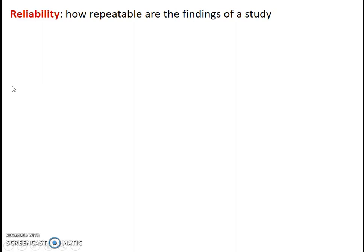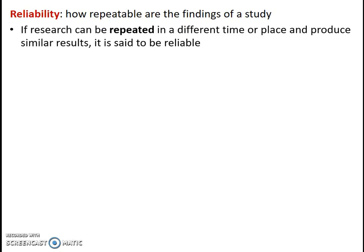So we're going to start off by talking about reliability. Reliability essentially is how repeatable are the findings of a study. Try to remember: reliability, repeatable — those two words together. Can you repeat the study easily and get similar findings? Because if it can be repeated in a different time or place and produce similar results, it's said to be reliable.